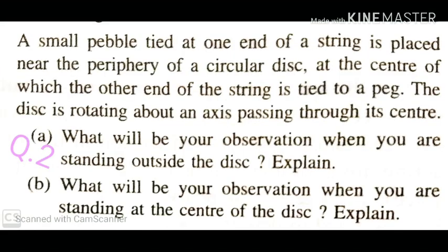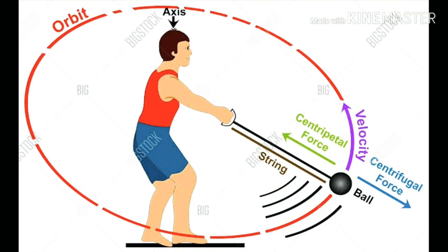Question two: A small pebble tied at one end of a string is placed near the periphery of a circular disc, with the other end tied to a peg at the centre. The disc rotates about an axis through its centre. When standing outside the disc, the pebble moves in a circular path because the tension in the string provides the necessary centripetal force. When standing at the centre of the disc, the pebble appears stationary because the centrifugal force on the pebble balances the tension, so both forces cancel out and there is no net force.